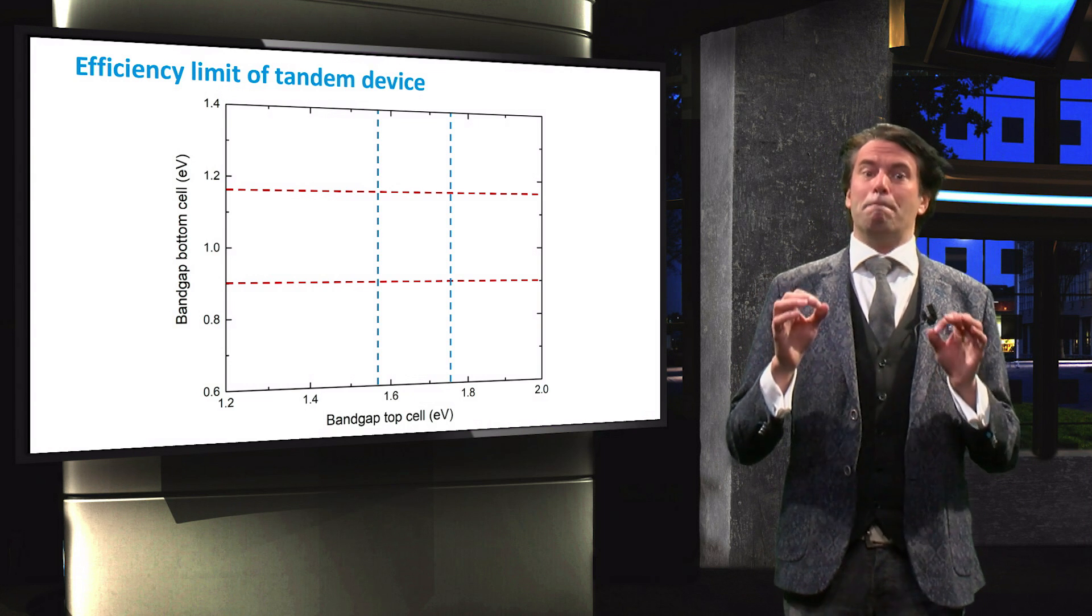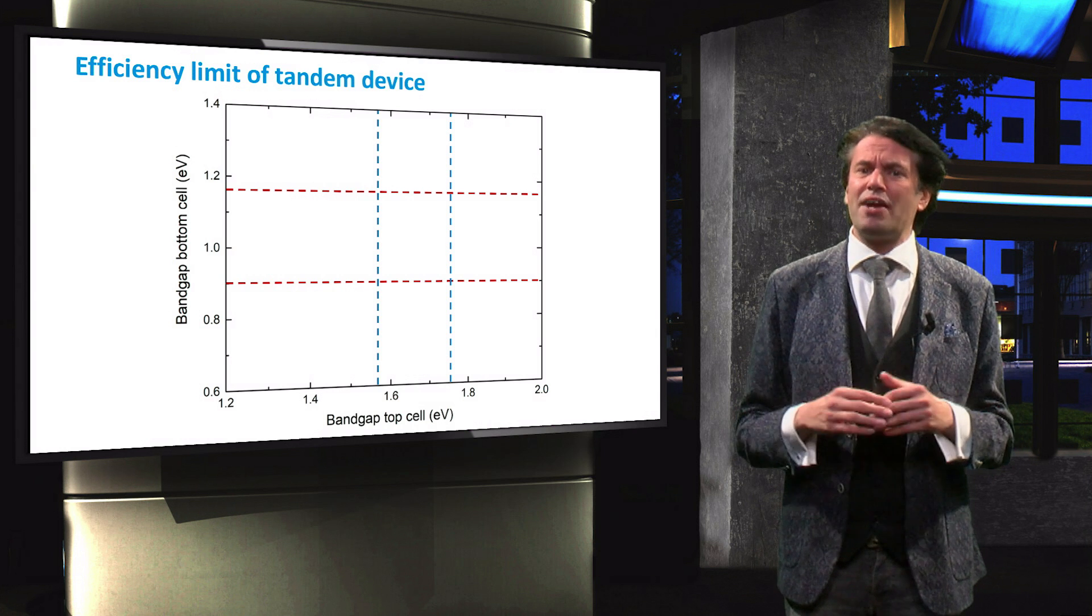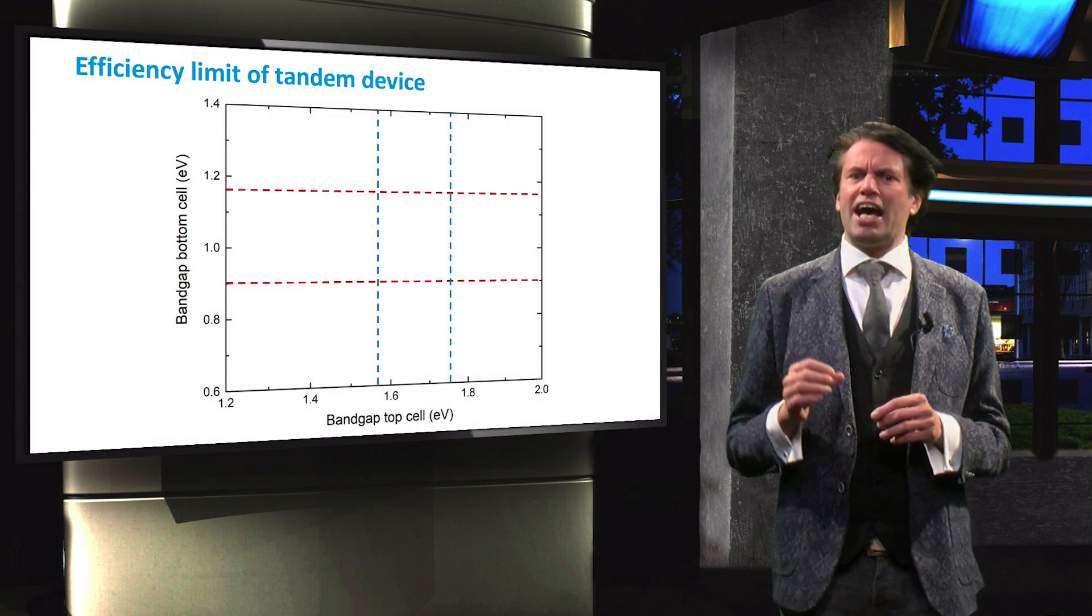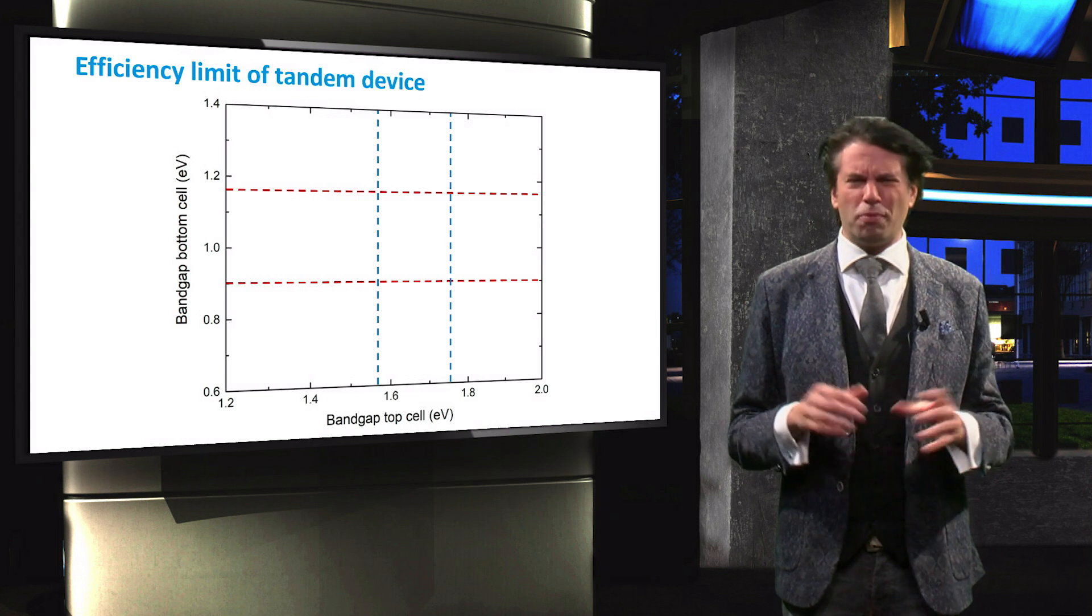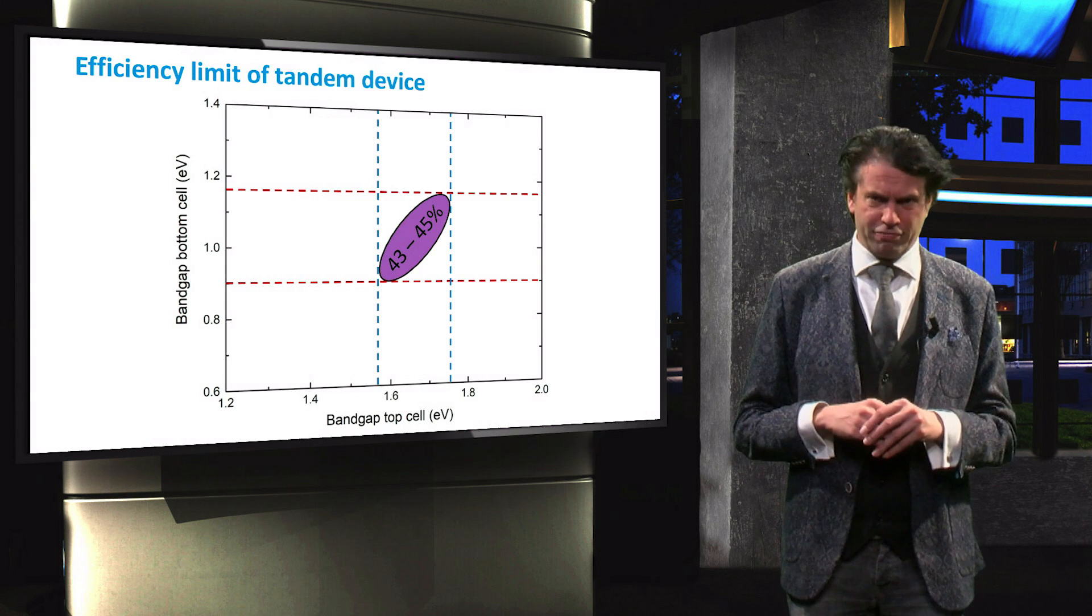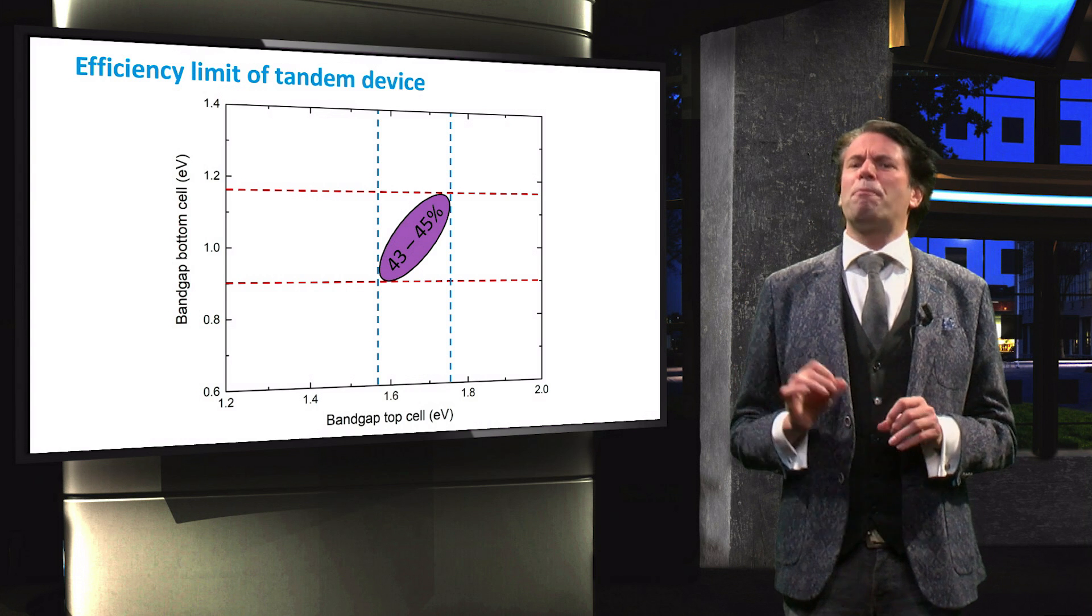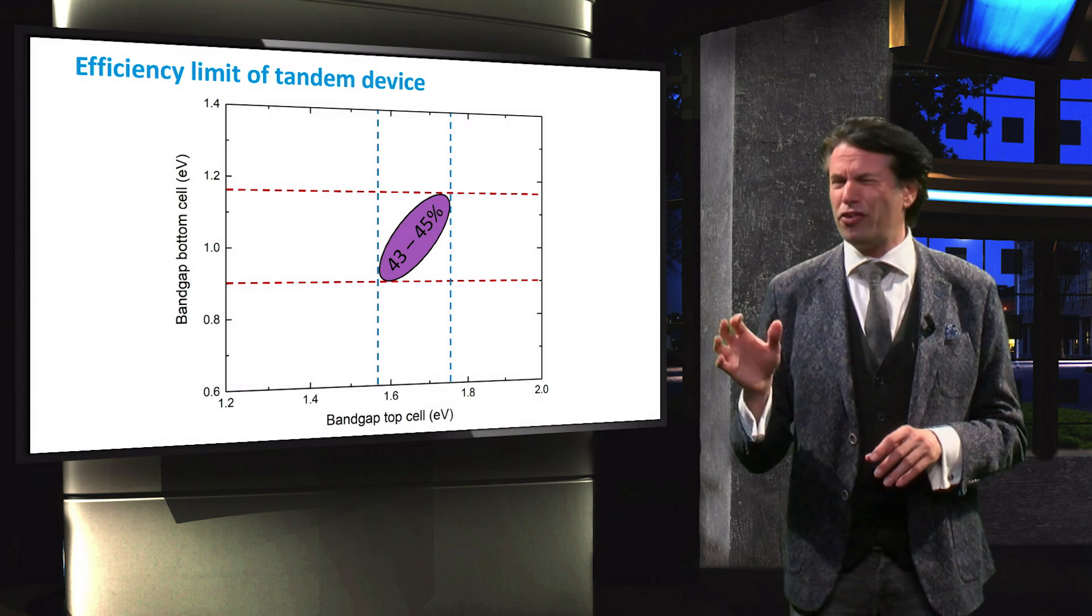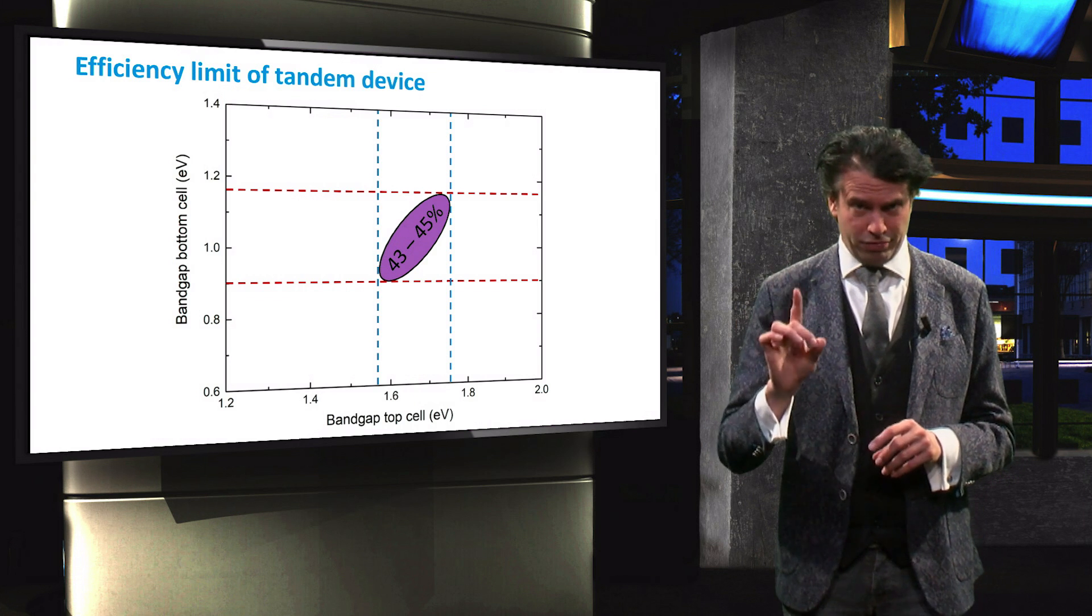The exact bandgap energy depends again on the design and on the bottom cell material. The ideal combination has a Shockley-Queisser upper limit of approximately 45%. However, more practical limits suggest a maximum achievable efficiency of 35 to 39% for a tandem device.